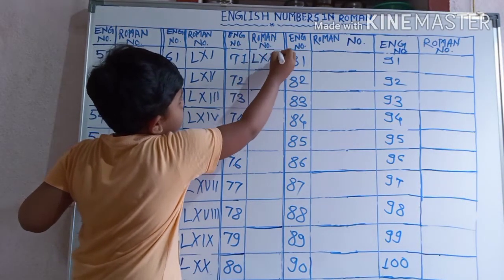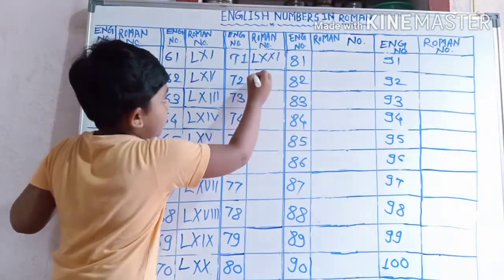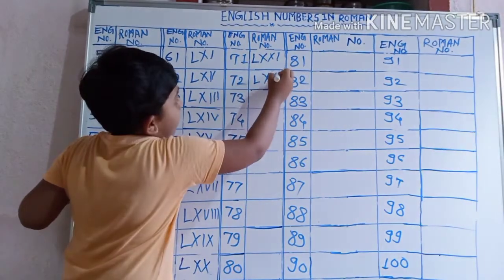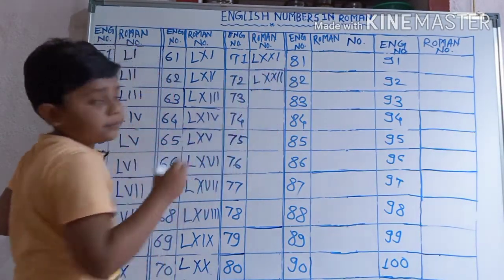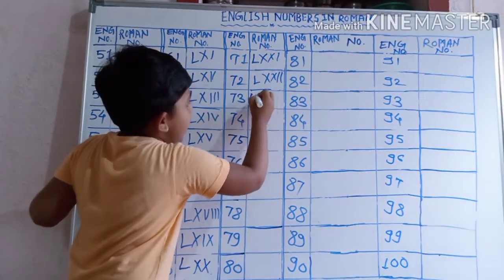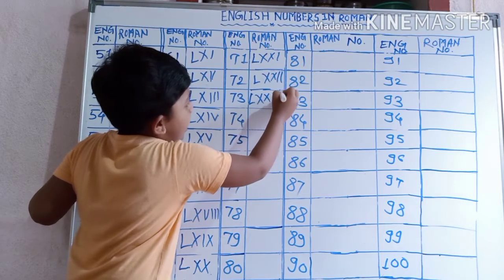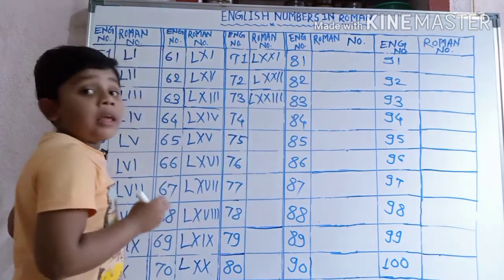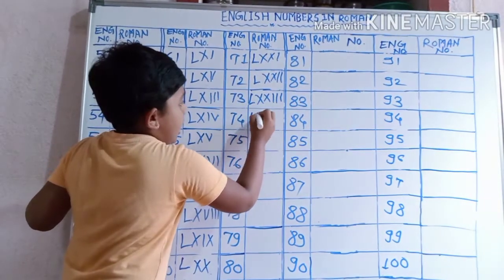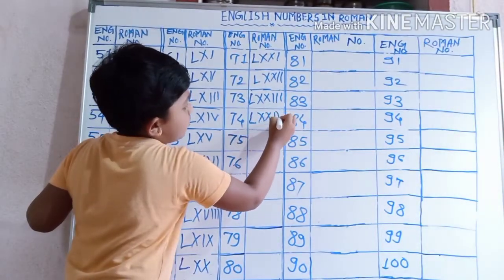71 ko: L, X, X, I, I. 72 ko: L, X, X, V, I, I. 73 ko: L, X, X, I, I, I. 74 ko: L, X, X, I, V.